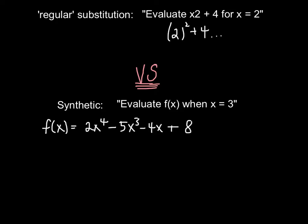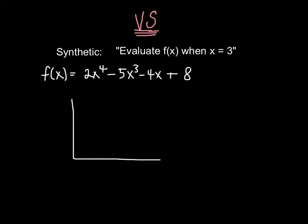This problem says to evaluate f(x) when x equals 3. So f(x) is 2x to the fourth minus 5x to the third minus 4x plus 8. So our first step is we're going to draw this kind of L-shaped line. And we're going to put our substituting value, which is 3 in this case, on the left side. We're going to write the constants of each of these here. So we have 2, negative 5, negative 4, and 8. But we need to be careful when writing them down. So we have 2, negative 5, and notice how these are going in descending order. But now we go from x to the third to just x. We need to put 0 for our x squared value. So 0, then we will continue with negative 4 and 8.